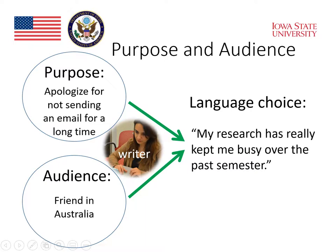The purpose of the email is to apologize for not sending an email for a long time. So what does our writer do? She chooses language that will be appropriate for her friend in Australia, language that will convey the apology that the writer intends to convey. She chooses this language: 'My research has really kept me busy over the past semester.' And she thinks this is a good way of beginning her apology to her friend. In English, an apology is a pretty good one if it includes the reason why something wasn't done, or why the act that needs to be apologized for was committed. So that works.